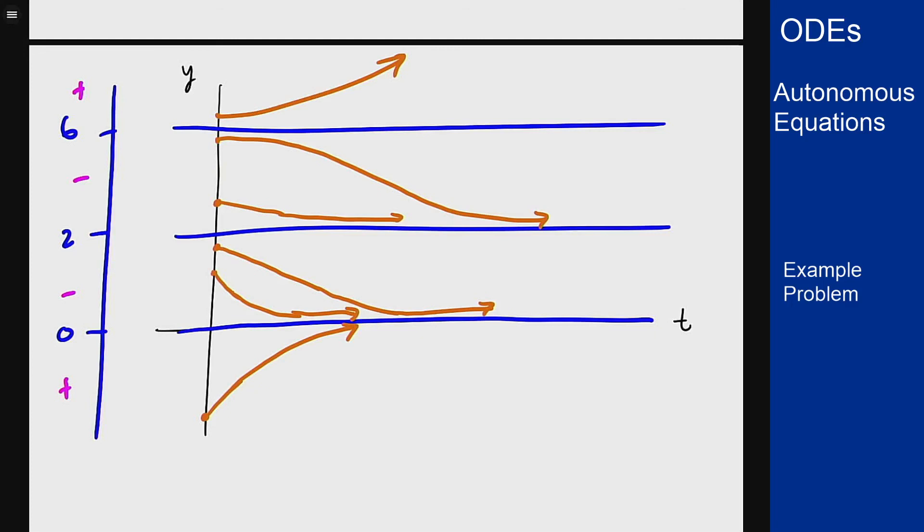That's how you can take an autonomous equation, find the equilibrium solutions, sketch the phase line, find stability, and use all the information together to then draw a sketch of trajectories for this solution over a range of initial conditions.